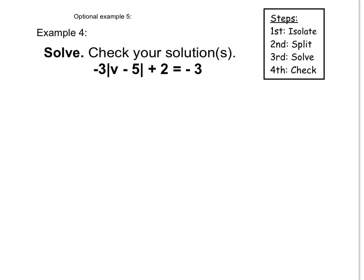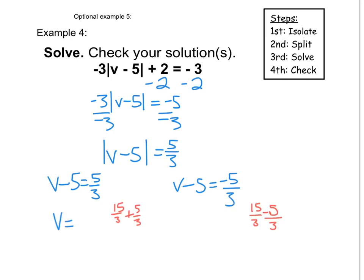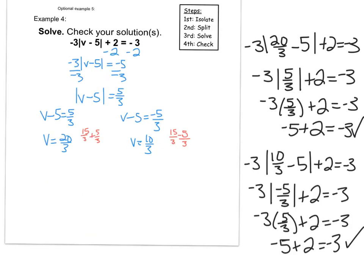I'll do this final example. The first thing I need to do is isolate my absolute value bars by subtracting 2 from both sides, then dividing by the coefficient of negative 3. So I have the absolute value of v minus 5 equals 5 thirds. Now I make two cases: either v minus 5 equals 5 thirds, or v minus 5 equals negative 5 thirds. Making a common denominator, I get v equals 20 thirds or v equals 10 thirds. Checking both solutions in the original problem, both work. So my answers are 20 over 3 and 10 over 3. Because of the absolute value, both 5 over 3 and negative 5 over 3 inside the bars came out to a positive value.